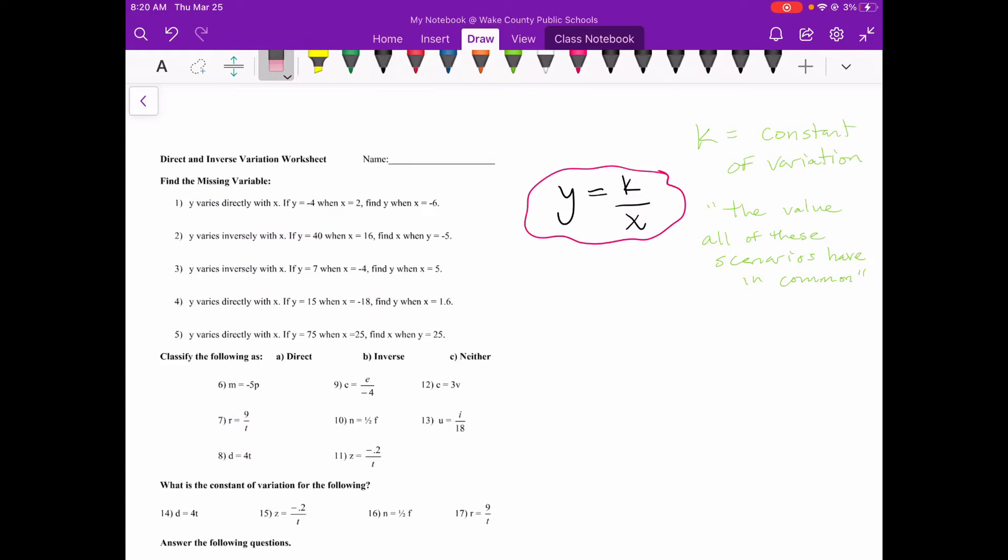So a real basic one to start with would be this number two right here. It says y varies inversely with x. So we're going to use this model right here. And it says, if y is equal to 40 when x is equal to 16, find x when y is equal to negative five. So when y is 40, plug that in, x is 16. So what that is, is they gave us our first scenario and enough information to help us figure out what that constant is.